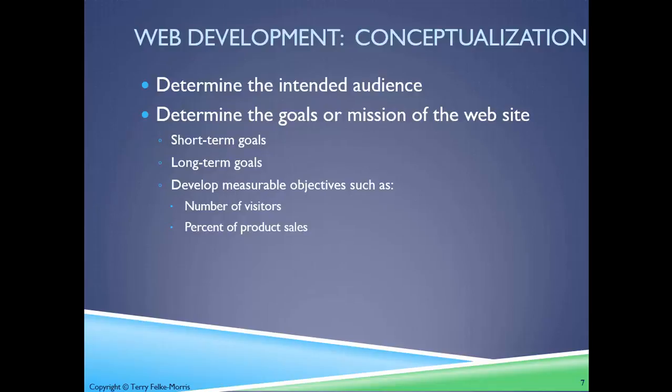There are other website development methodologies as well. There's prototyping — a limited working model that doesn't have all the bells and whistles. There's spiral systems development, where small portions of a project are completed one after another. There's JAD, or Joint Application Development, which focuses on group meetings and collaboration between users and developers. There's agile development, where the project is broken into many mini phases, and there are also organization-specific development methodologies.